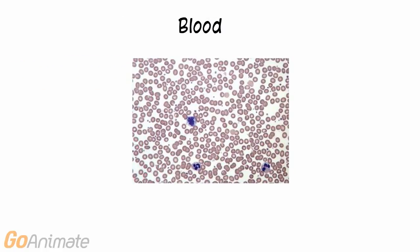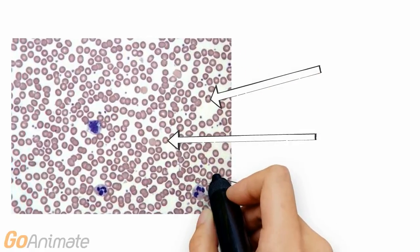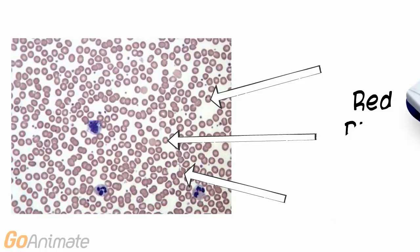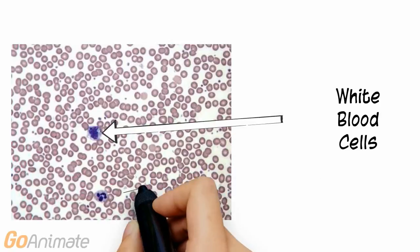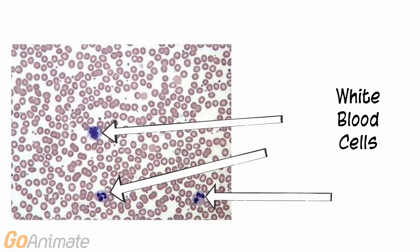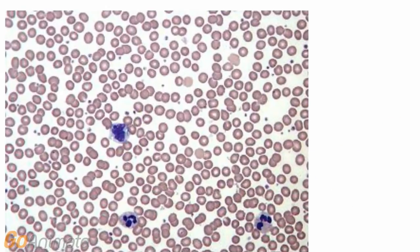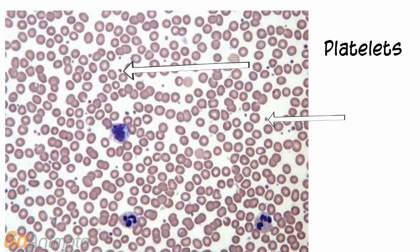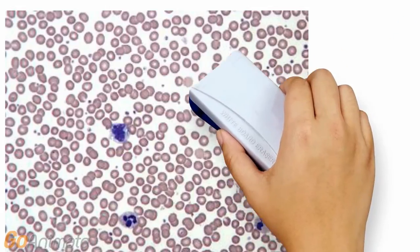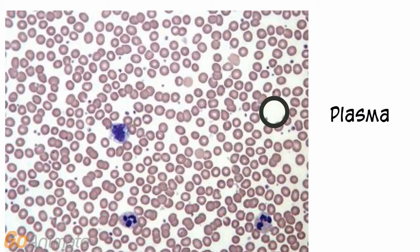Blood is also a connective tissue. Blood contains a variety of cells, including red blood cells, white blood cells, and platelets. The blood cells are suspended in a fluid matrix called plasma.